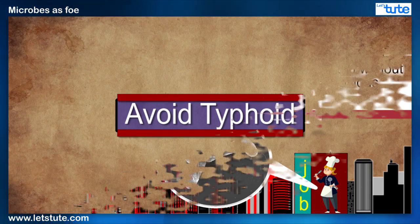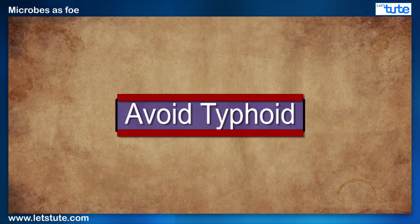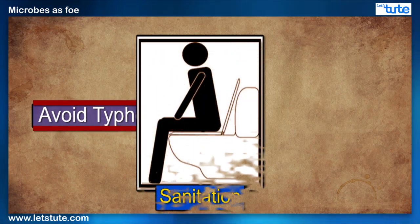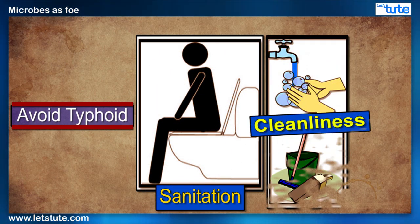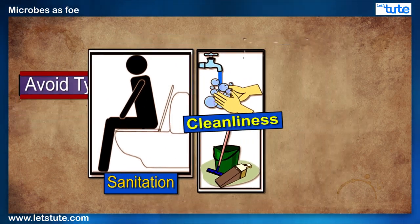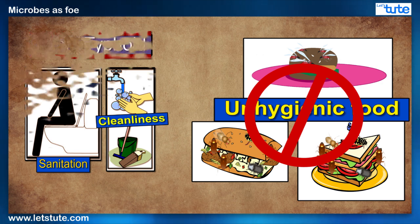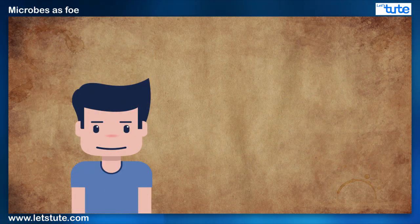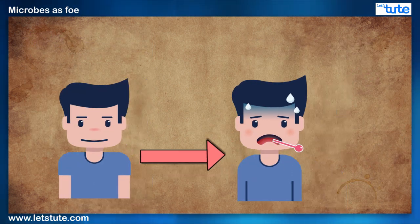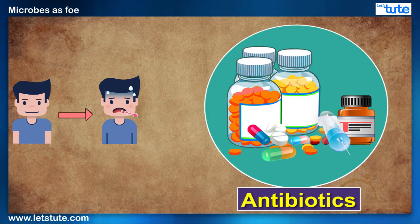Therefore, in order to keep typhoid at bay, one should not only maintain proper sanitation and cleanliness but also refrain from consuming unhygienic food. And in case a person contracts an infection, then appropriate antibiotics should be taken as a cure.